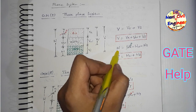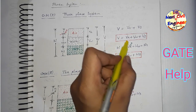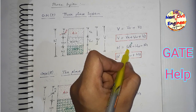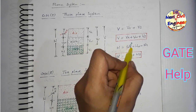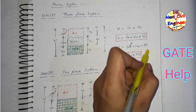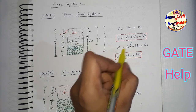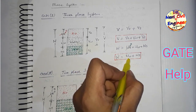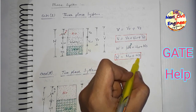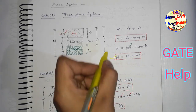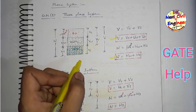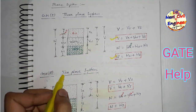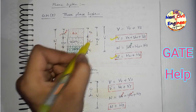Weight के terms में total weight equals to weight of air plus weight of water plus weight of solids। Weight of air zero consider करते हैं इसलिए total weight equals to weight of water plus weight of solids। I hope आपको total volume और total weight दोनों points clear हो गए होंगे।